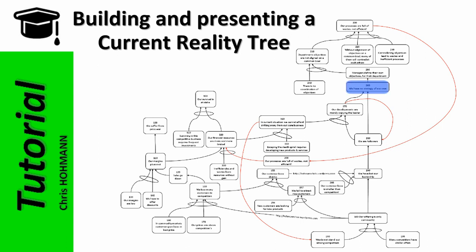It means our strategy is defined by our competitor - all we do is develop me-too products and services. If we have no strategy of our own then managers define their own objectives for their departments. If managers define their own objectives and there is no coordination of objectives, then departments' objectives are not aligned on a common goal. If departments' objectives are not aligned on a common goal, and without alignment many will contradict each other, and contradicting objectives lead to waste and inefficient processes, then our processes are full of waste and not efficient.